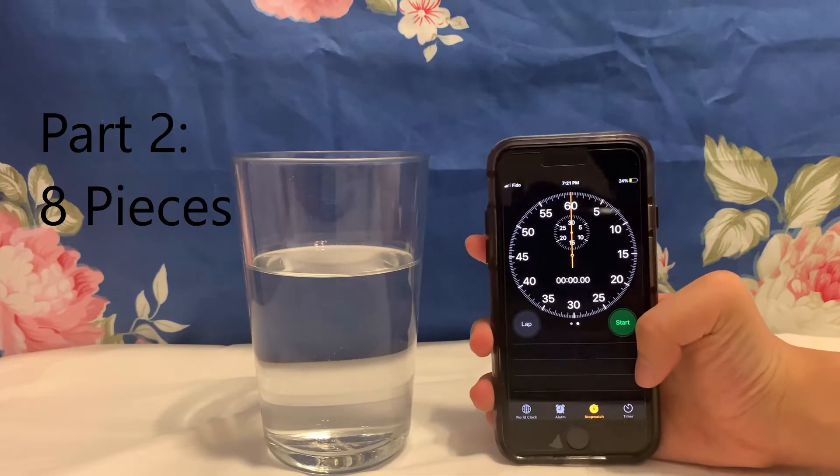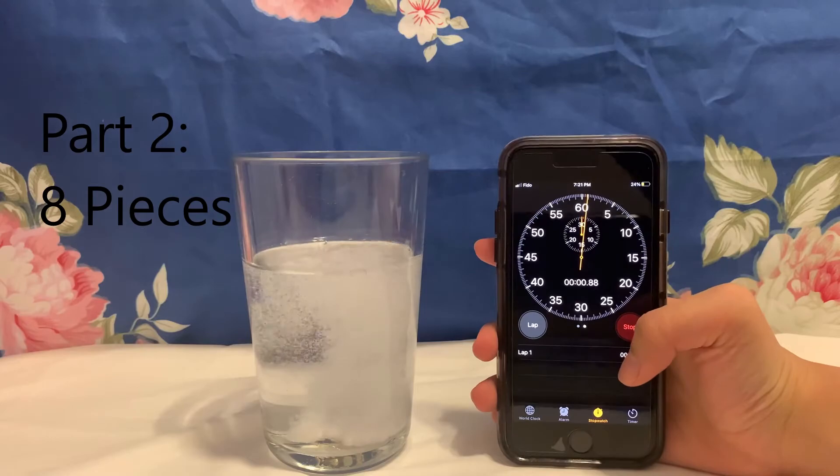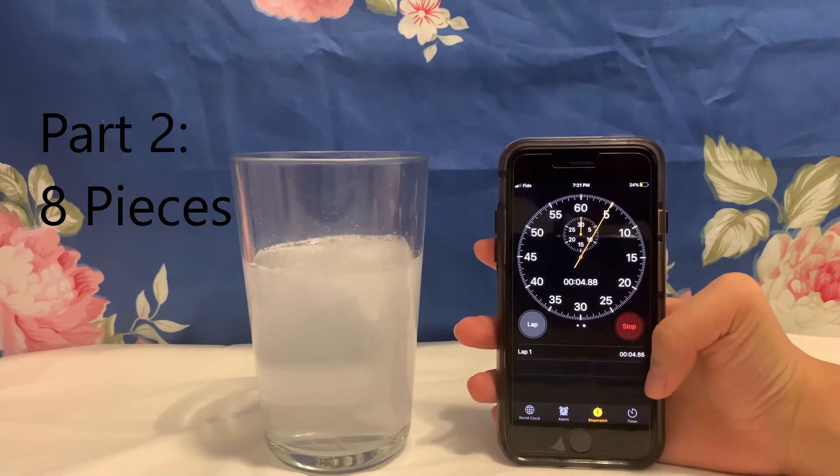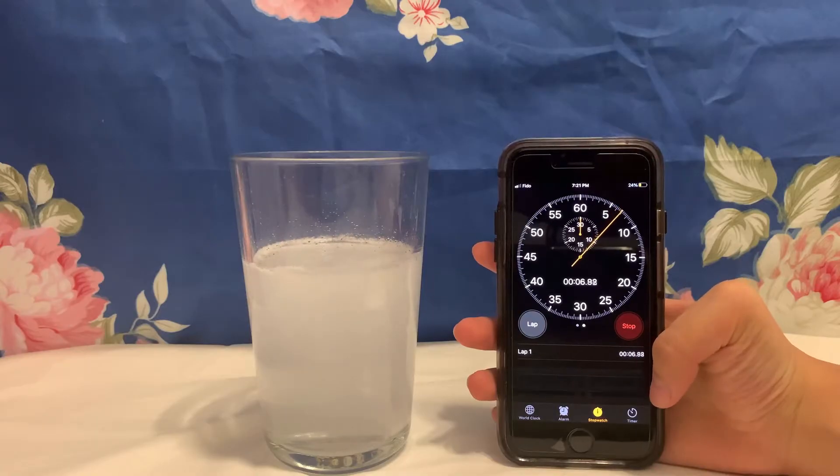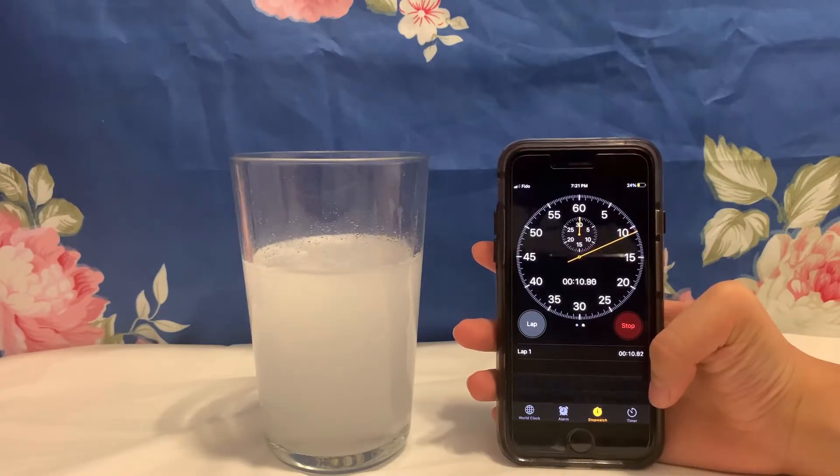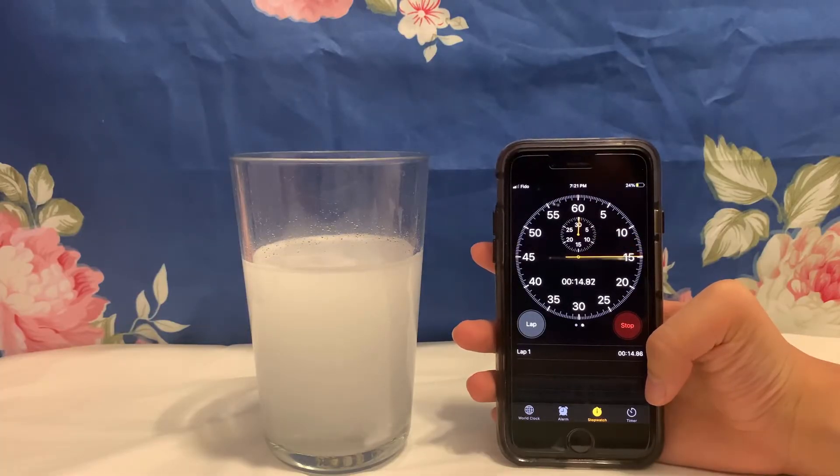Part two, break an Alka-Seltzer tablet into eight pieces. Repeat the same steps in part one and drop the eight pieces of Alka-Seltzer into the glass. Start your stopwatch and once you don't see any more bubbles forming, stop your stopwatch. Record your results in your table.